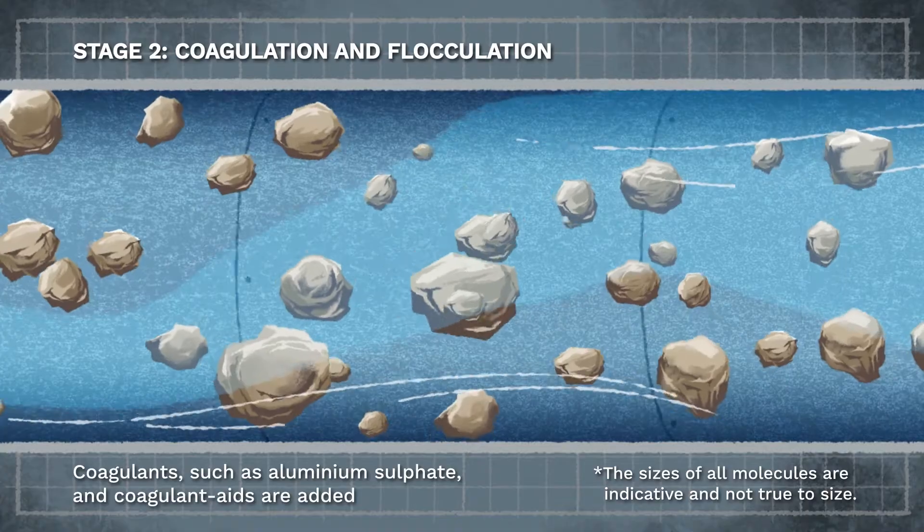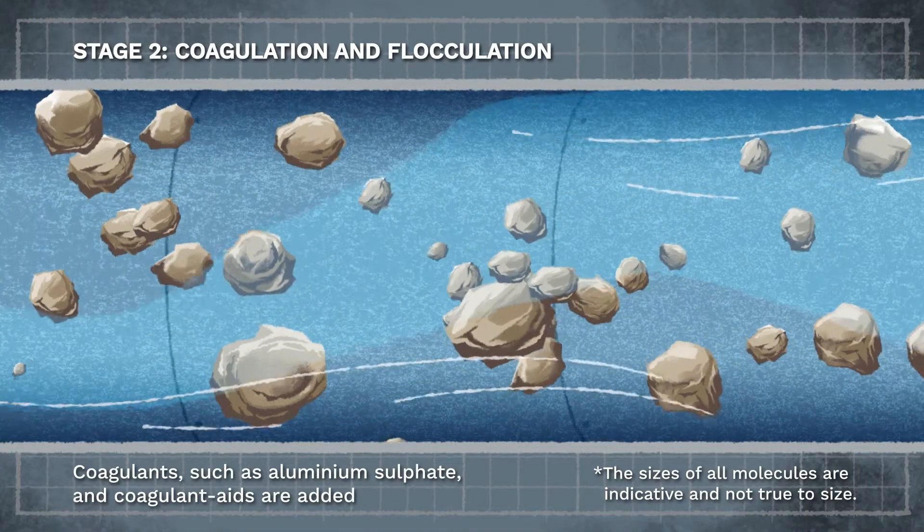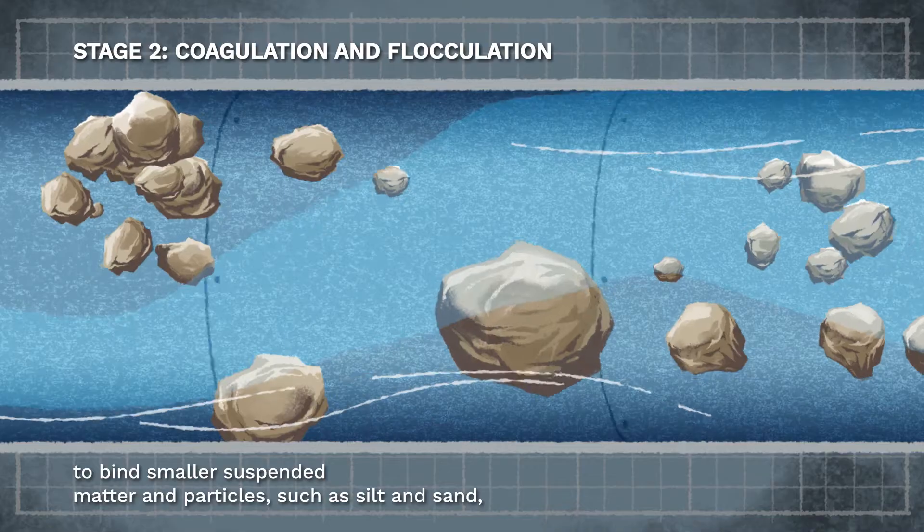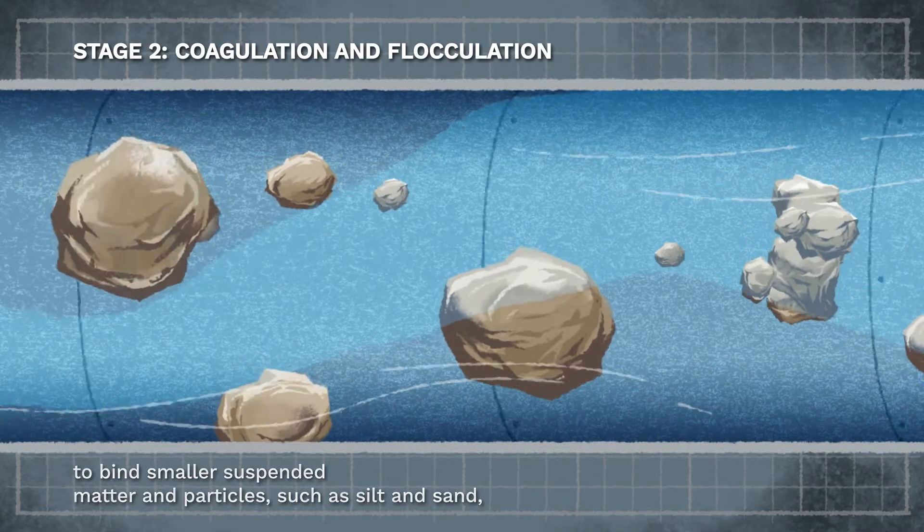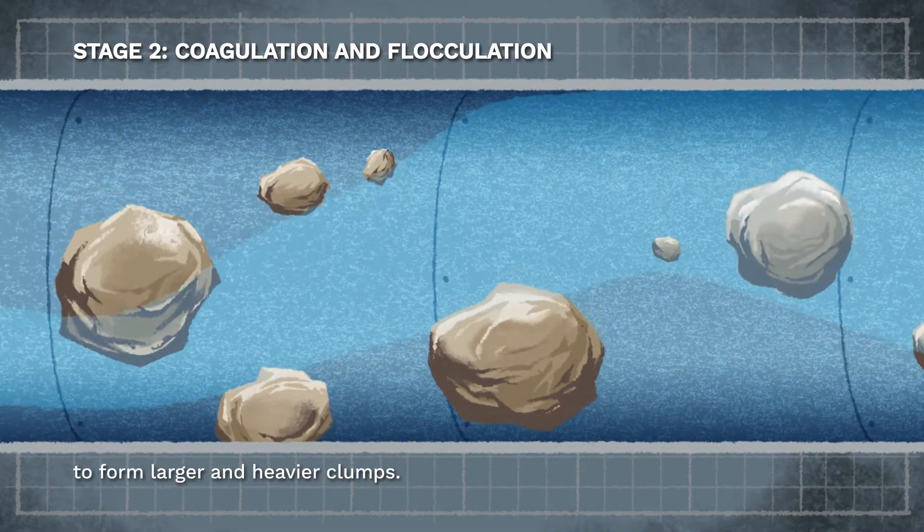Coagulants such as aluminium sulfate and coagulant aids are added to bind smaller suspended matter and particles, such as silt and sand, to form larger and heavier clumps.